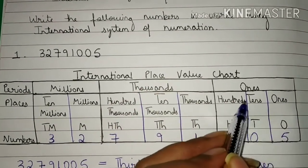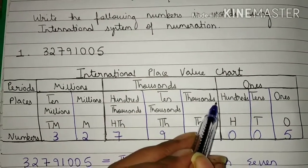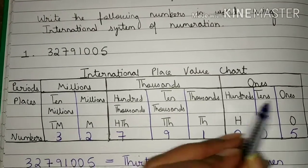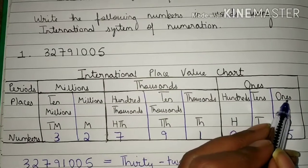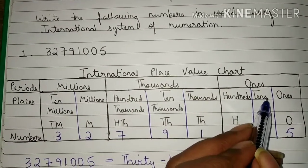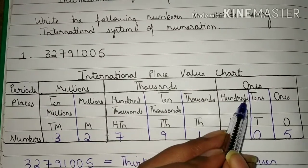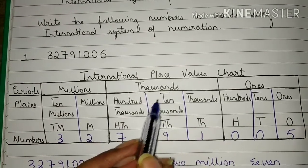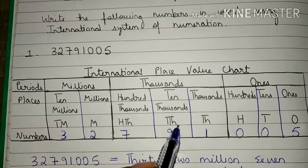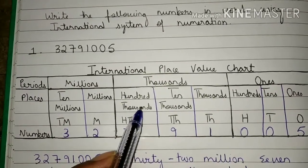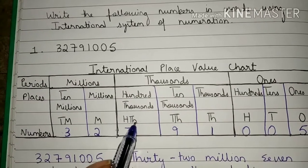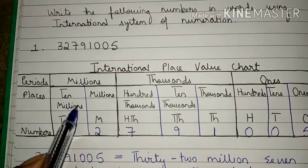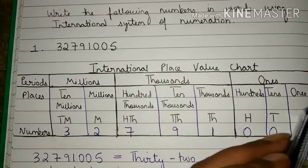In the chart, you will mention the periods: ones, thousands, and millions. Then you will mention the places: ones, tens, hundreds, thousands, ten thousands, hundred thousands, millions, and ten millions. For abbreviations: ones = O, tens = T, hundreds = H, thousands = Th, ten thousands = TTh, hundred thousands = HTh, millions = M, ten millions = TM.